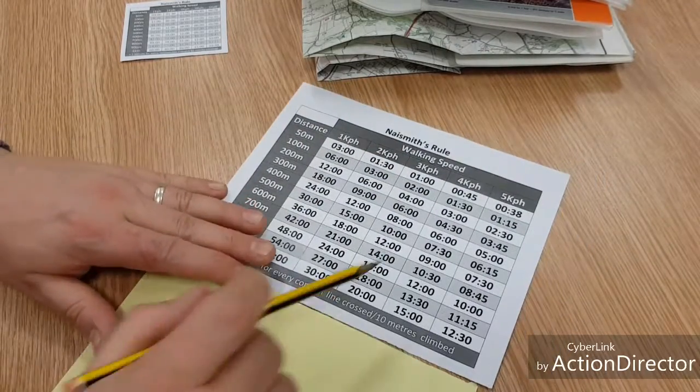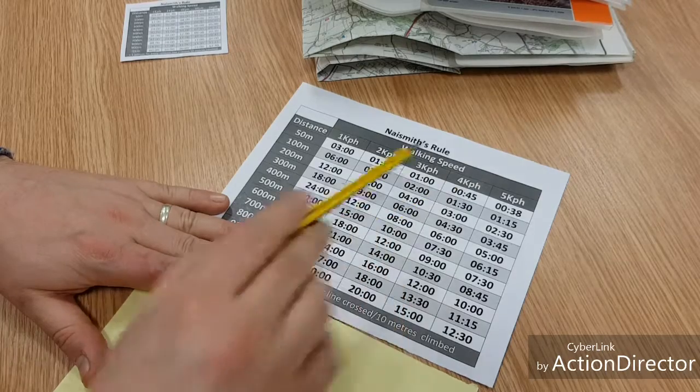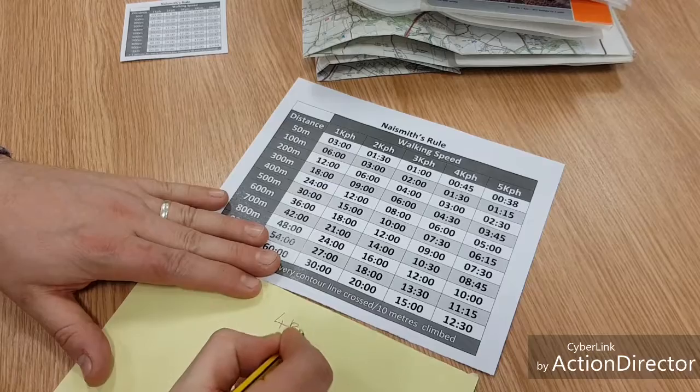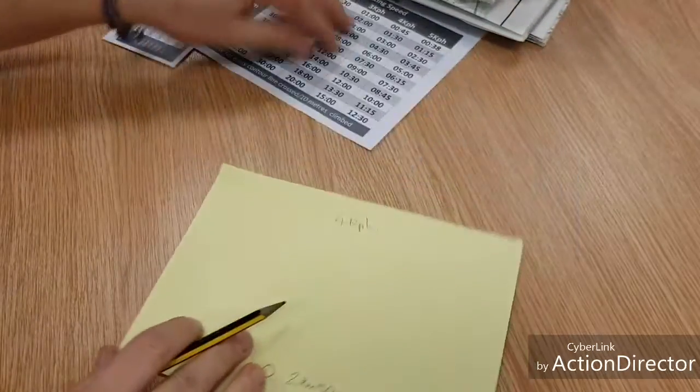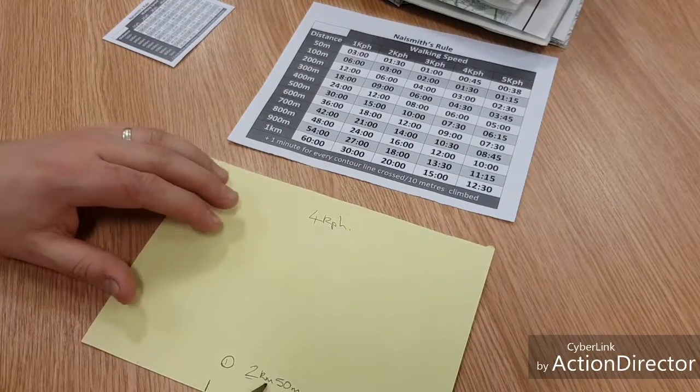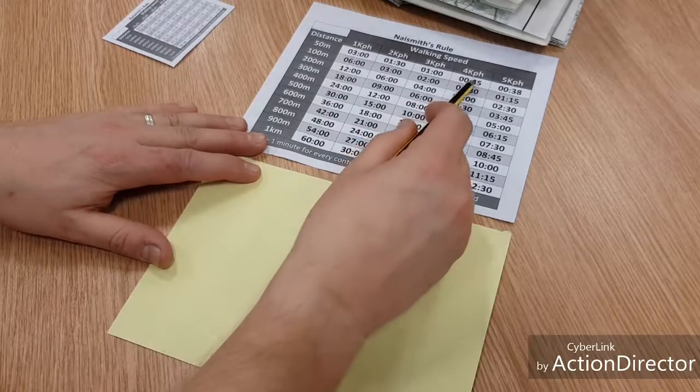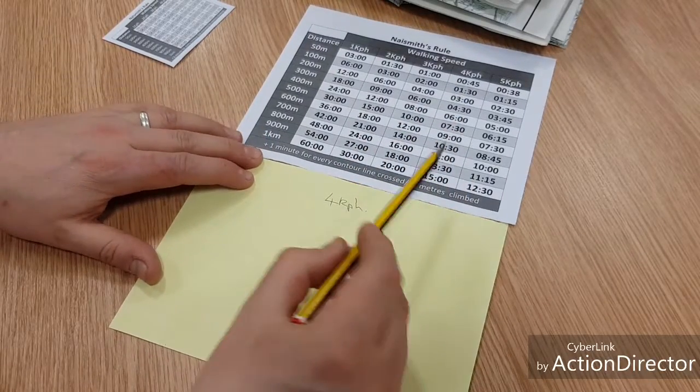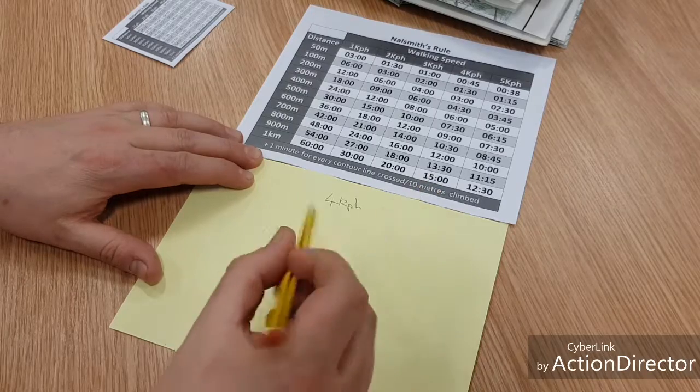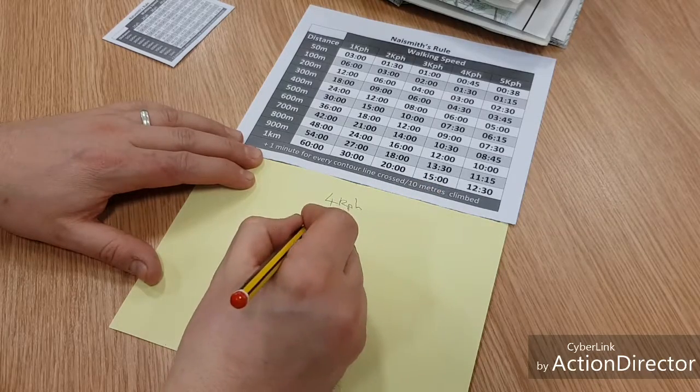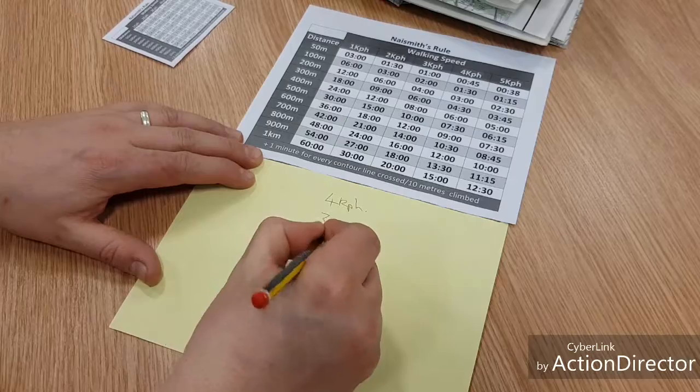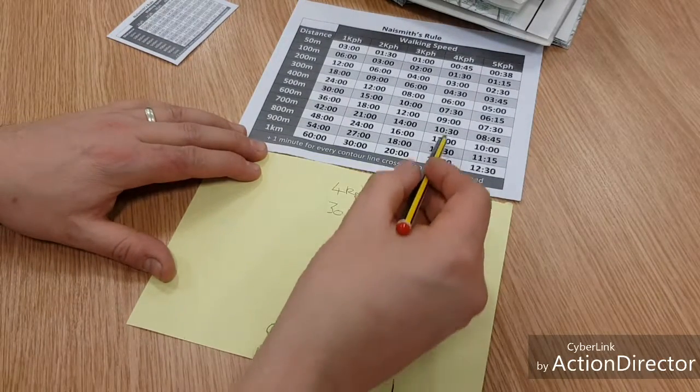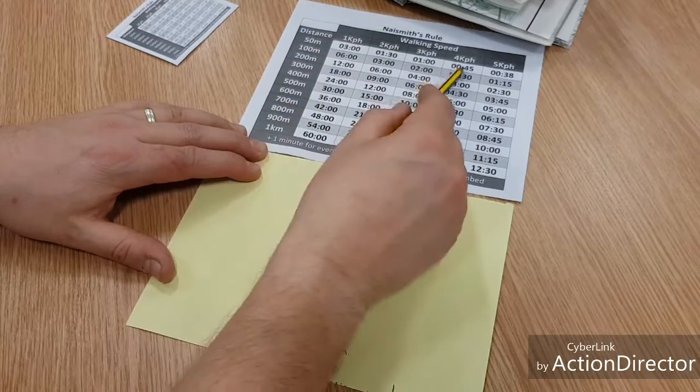You might have a bigger version something like this. So let's imagine that our expedition we are estimating that we're going to walk at four kilometers an hour, so 4 kph, and we know that the first part of the leg is two kilometers. So four kilometers, we've come down here: one kilometer is 15 minutes, so 15 minutes no seconds. So that means that two kilometers is going to be 30 minutes.